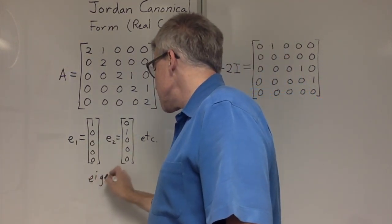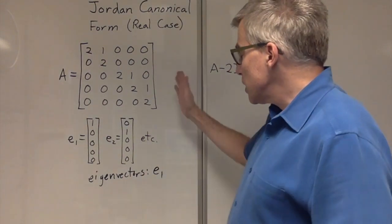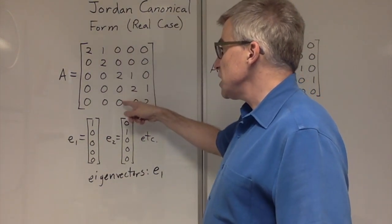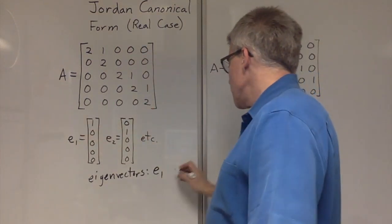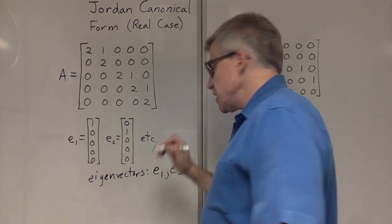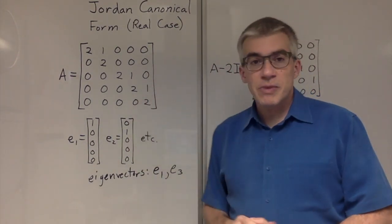So eigenvectors include E1, and if we look at other unit vectors, we will find that E3 also will produce 2E3, so E3 is another eigenvector. Those are the only two eigenvectors that this matrix has.